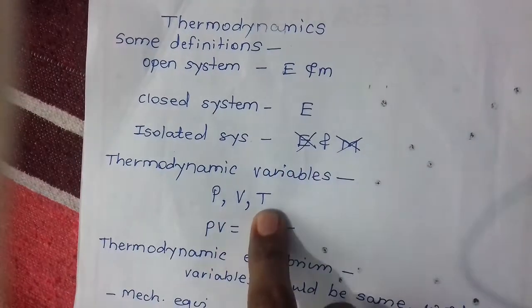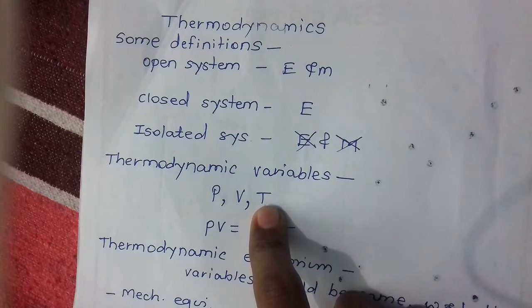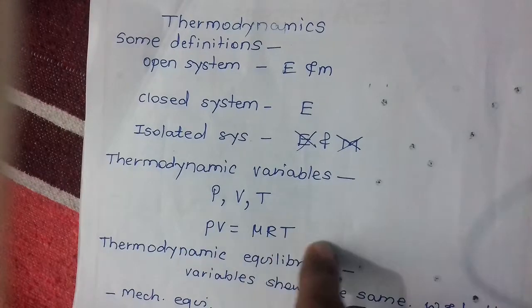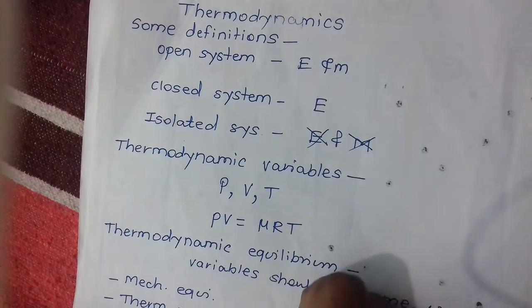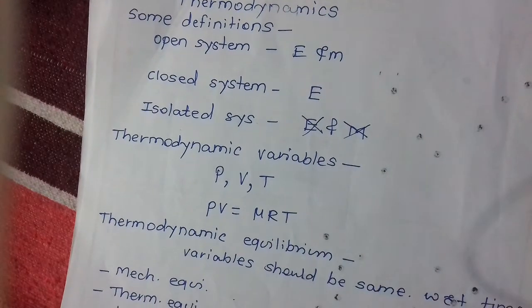P, V, T are thermodynamic variables. The equation for ideal gases is PV = μRT, where μ is the number of moles.